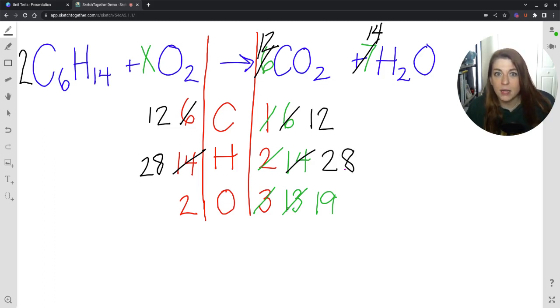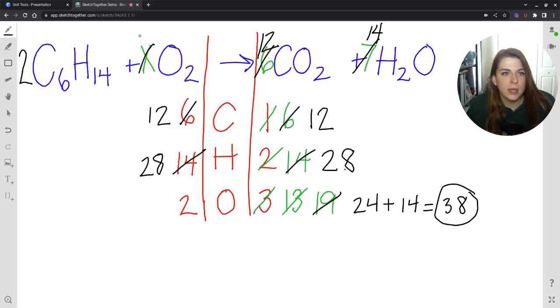That is pairing up very well so far. And then, between my oxygens, they're in two places, remember. This 12 times the 2 on the carbon dioxide gives me a total of 24 on the carbon dioxide. Plus, I have 14 in the water, which is going to give me 38 in total.